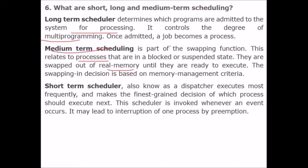Short-term scheduling, also known as the dispatcher, executes most frequently and makes the fine-grained decision of which process should execute next. The long-term scheduler selects a job and makes it a process. The short-term scheduler then makes this process actually run, and is involved whenever an interrupt occurs, which may lead to preemption.